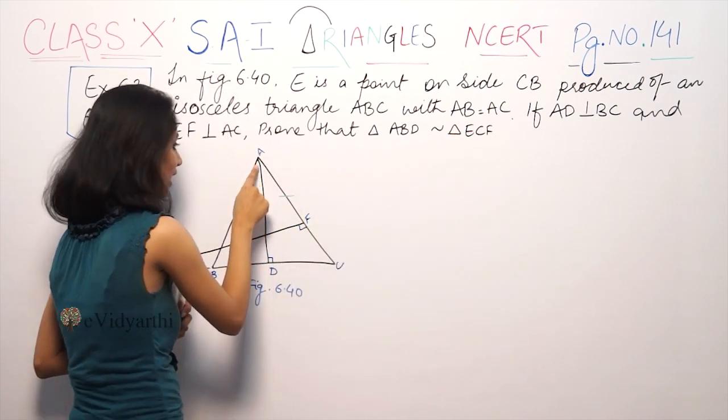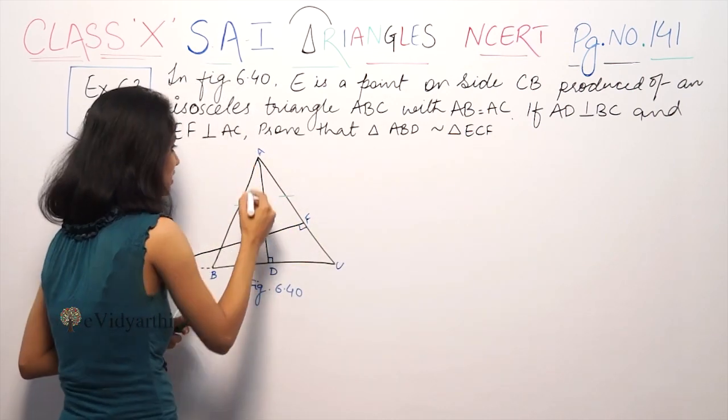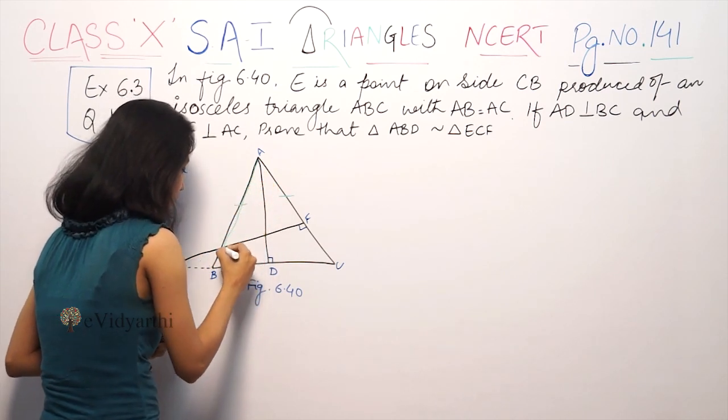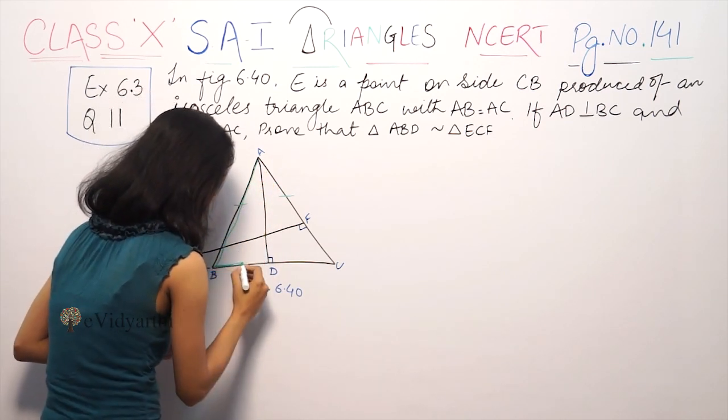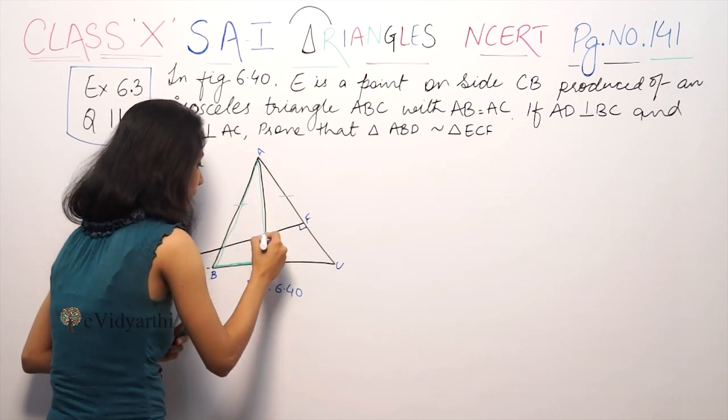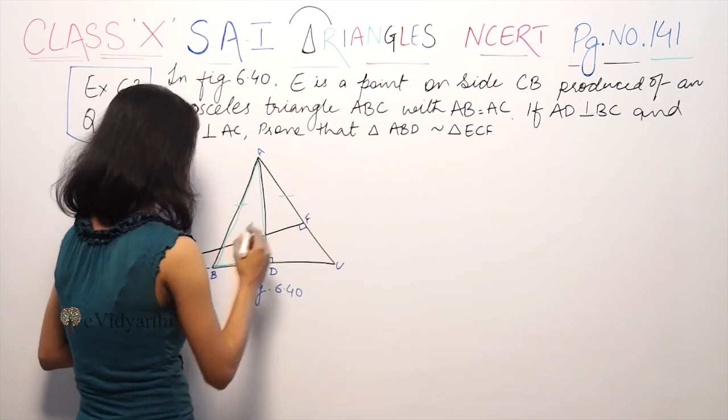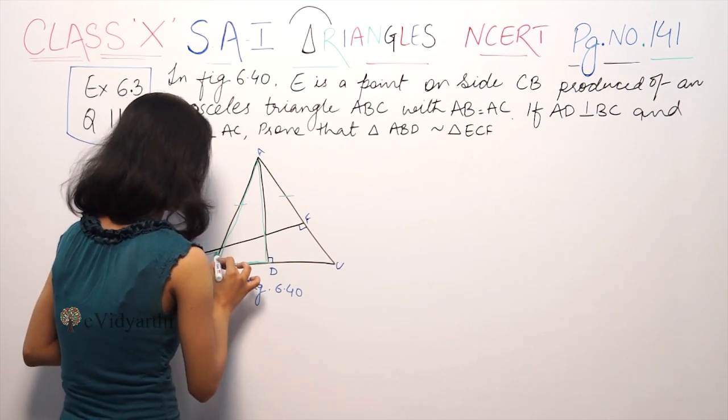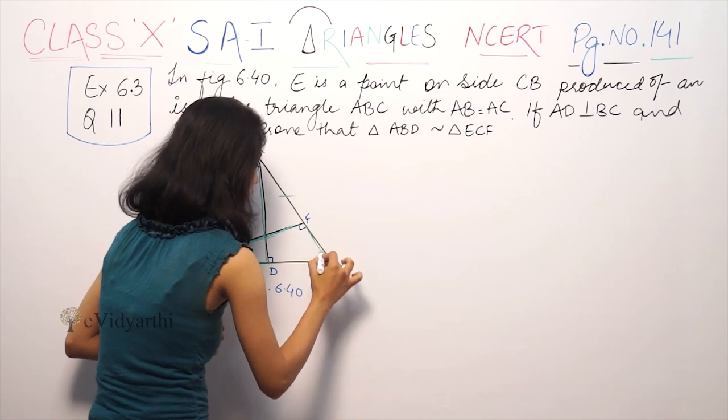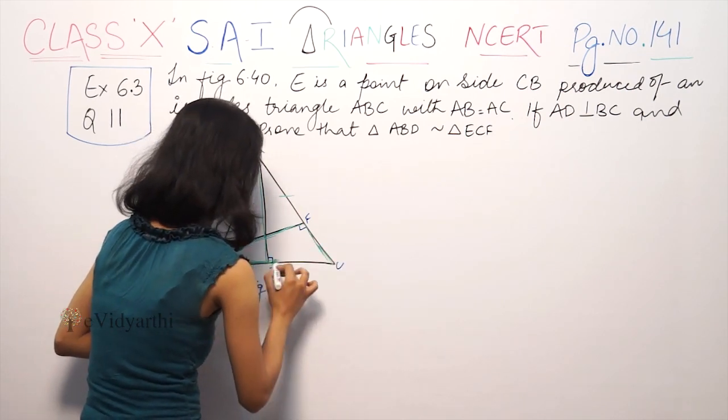So prove that triangle ABD is similar to triangle ECF. E, C, F. This triangle.